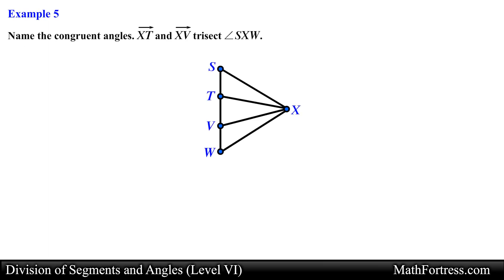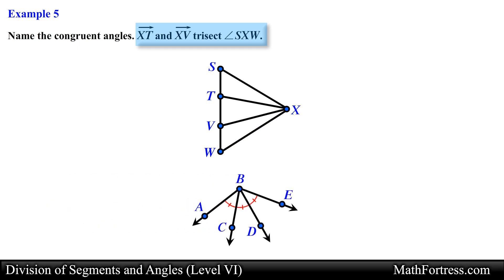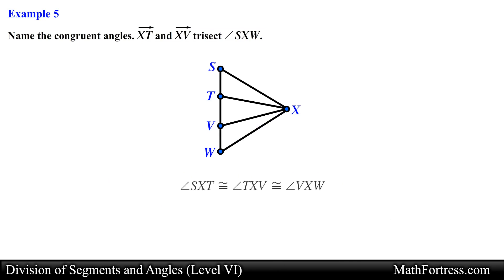Name the congruent angles — Ray XT and Ray XV trisect angle SXW. Similar to the previous problem we are asked to determine which angles are congruent given that Ray XT and Ray XV trisect angle SXW. Recall that angle trisectors split an angle into three congruent angles. In this case angle SXT is congruent to angle TXV, which is also congruent to angle VXW. And this is our final answer.